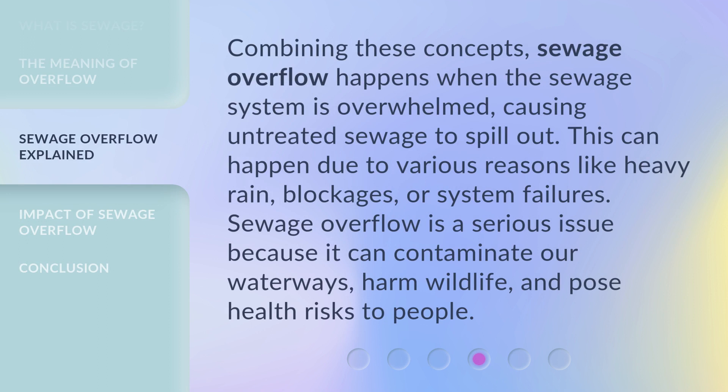Combining these concepts, sewage overflow happens when the sewage system is overwhelmed, causing untreated sewage to spill out. This can happen due to various reasons like heavy rain, blockages, or system failures. Sewage overflow is a serious issue because it can contaminate our waterways, harm wildlife, and pose health risks to people.